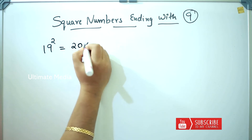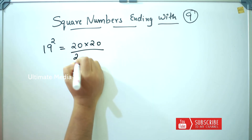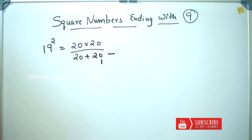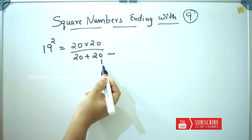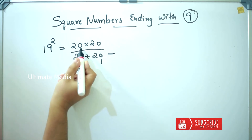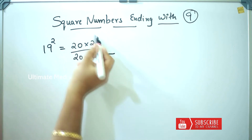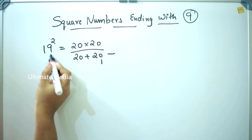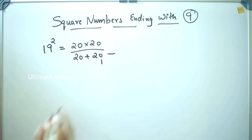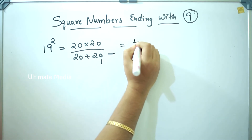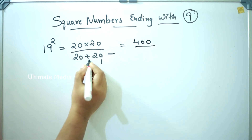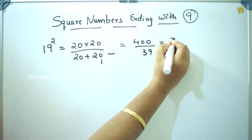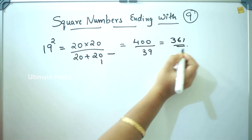Next, for 19 square: 20 into 20, by 20 plus 20, minus 1. We are going to see how we do this calculation pattern using the zero formula.